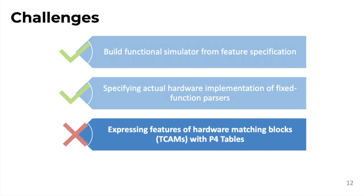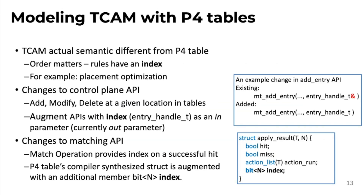The next thing we explored is expressing low-level features of the matching block, in particular TCAM. Again, P4 abstracts everything — it says you don't want to know what's underneath. Except we do want to know, especially with TCAM, which has the interesting property that order matters: all rules have an index and placement determines matching order. You may want to explore placement optimization. We made changes to the control plane API: we added an index that tells you where to place the rule, and on the matching API, you return an index indicating which rule matched and at which index.